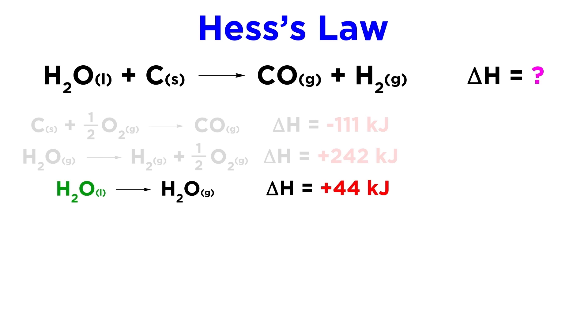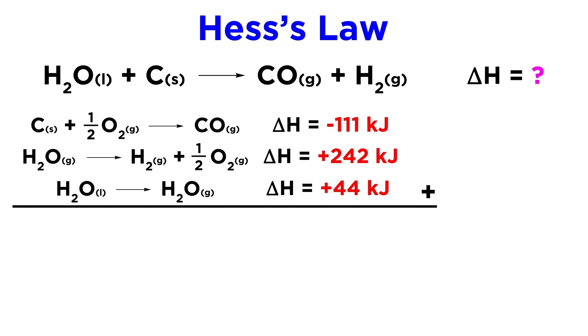And the third gives us liquid water on the left, so that one is actually fine just the way it is. We can add these all up, and notice that oxygen gas and water vapor are present on both sides and will cancel out, leaving us with exactly what we are looking for. And adding up the respective delta H values, we get positive 175 kilojoules.